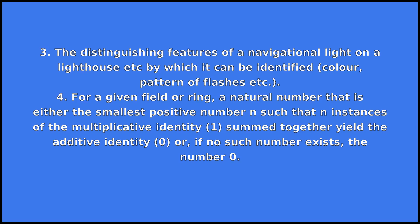4. For a given field or ring, a natural number that is either the smallest positive number n such that n instances of the multiplicative identity 1 summed together yield the additive identity 0, or if no such number exists, the number 0.